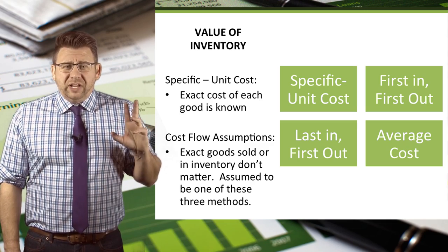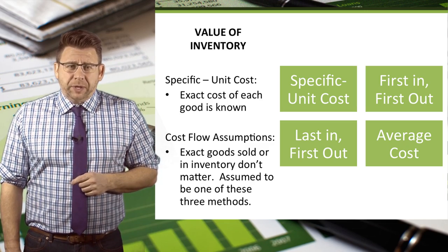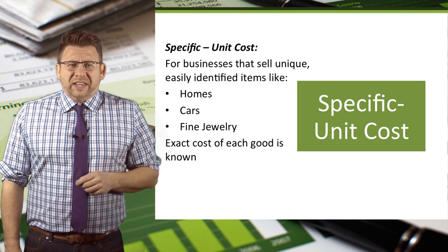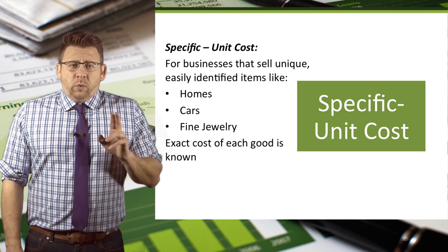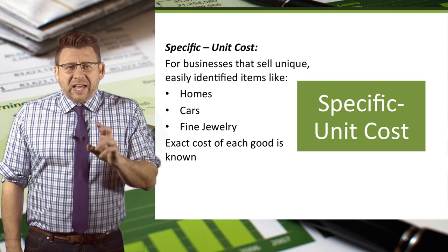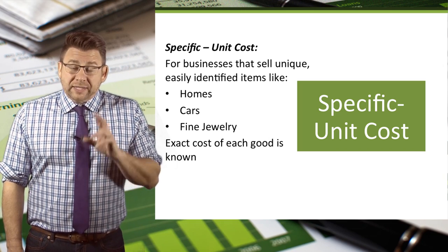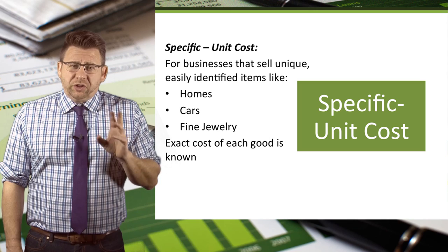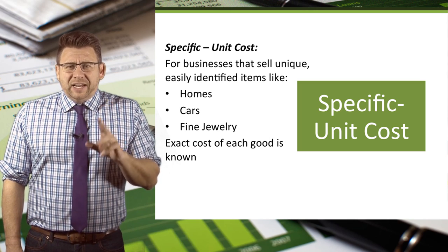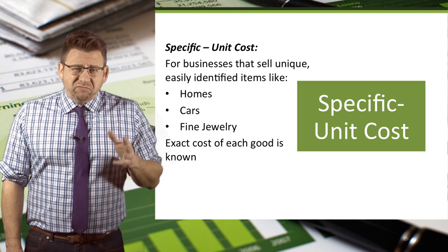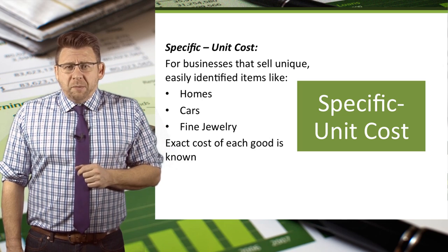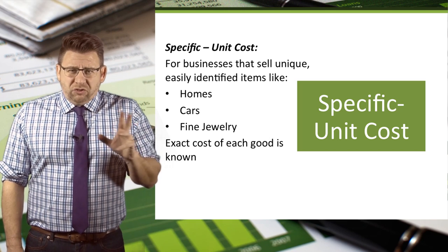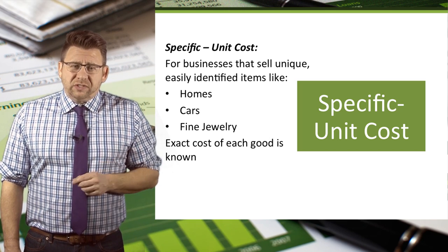A company can use any of these methods to account for its inventory. The specific unit cost method is also known as the specific identification method. With this method, a company knows exactly which items were sold and exactly the cost of those items. This costing method is best for businesses that sell unique, easily identifiable inventory items, such as real estate, cars, or jewels. But any business that has low sales volume and a wide range of prices and costs could use this method.